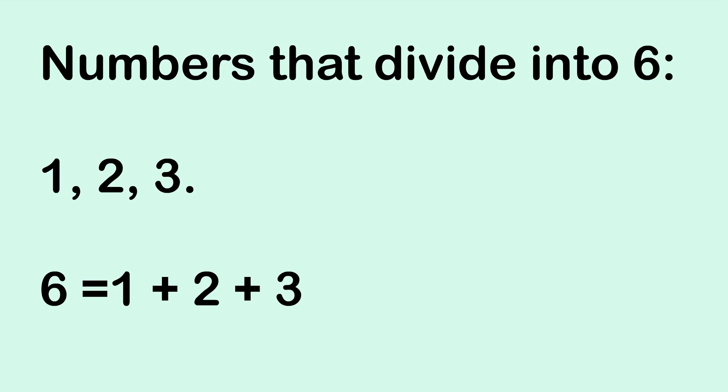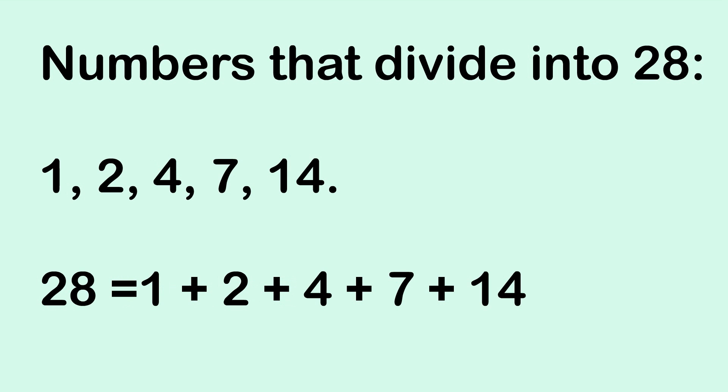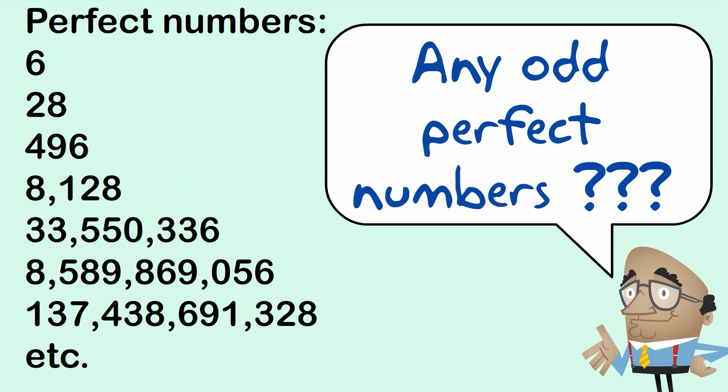Number 10. The number 6 is a perfect number because if we add up all its divisors, other than the number 6 itself, we get 6. Similarly, 28 is a perfect number and you can see the calculations here. One of the interesting things is we don't know if there are any odd perfect numbers.